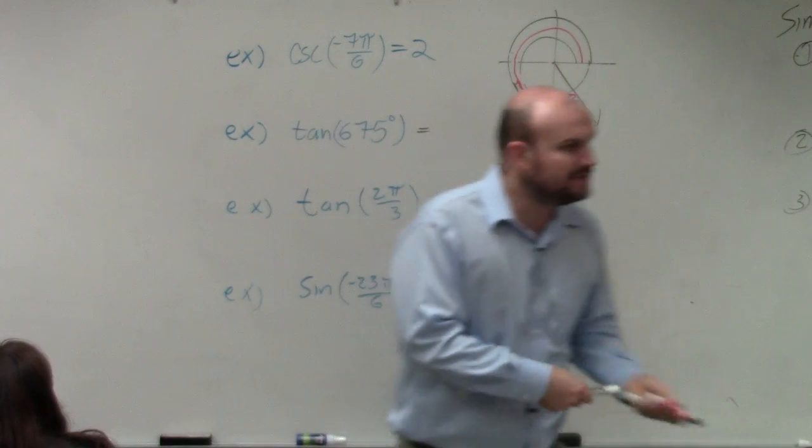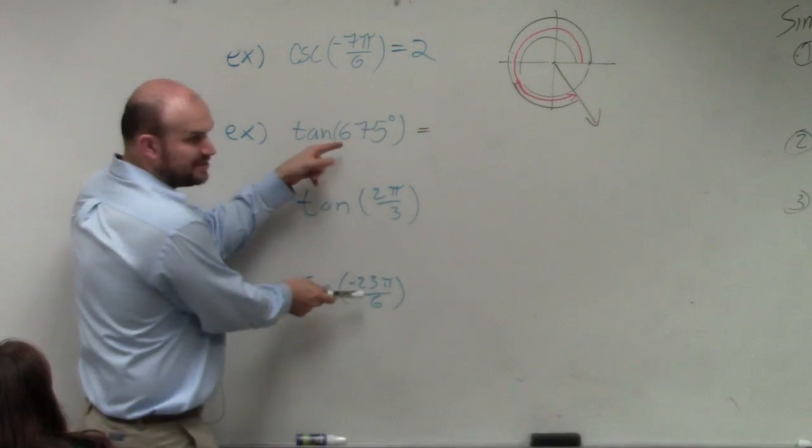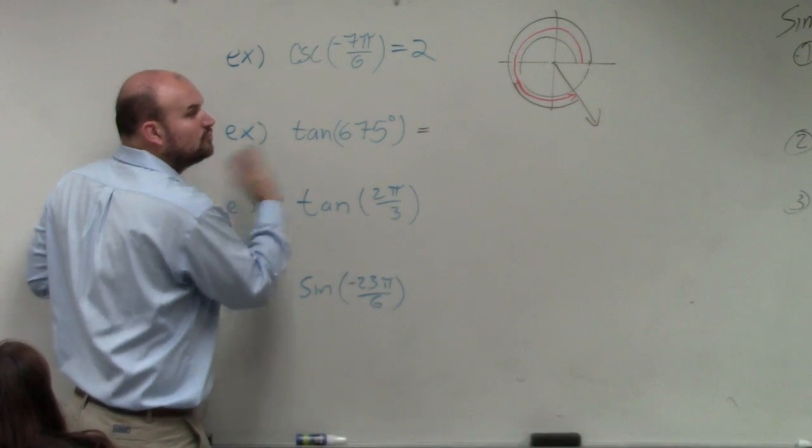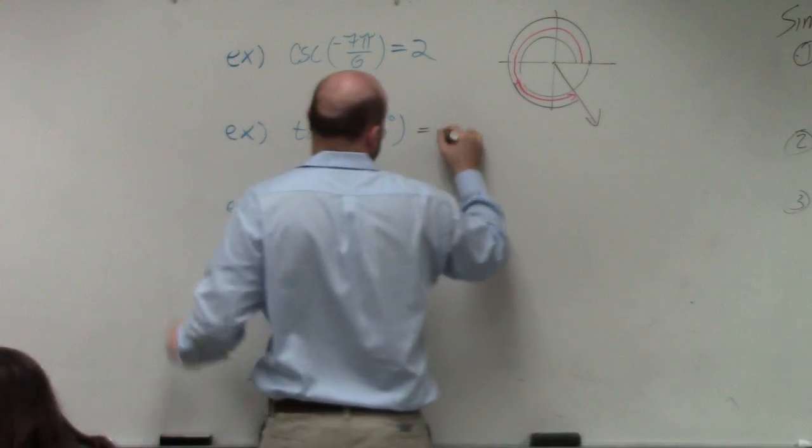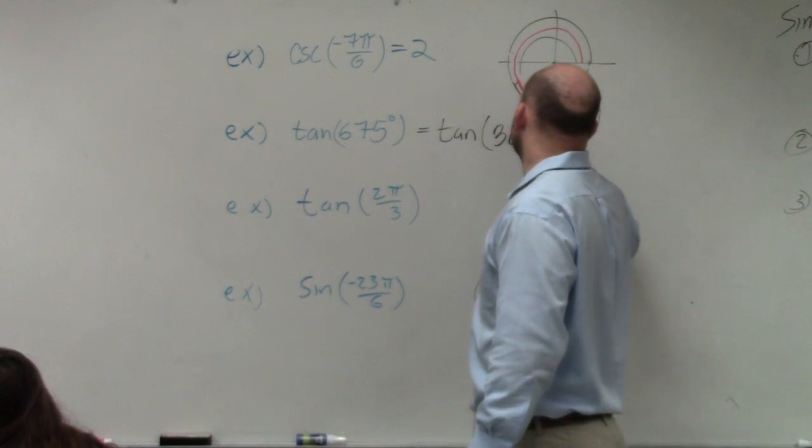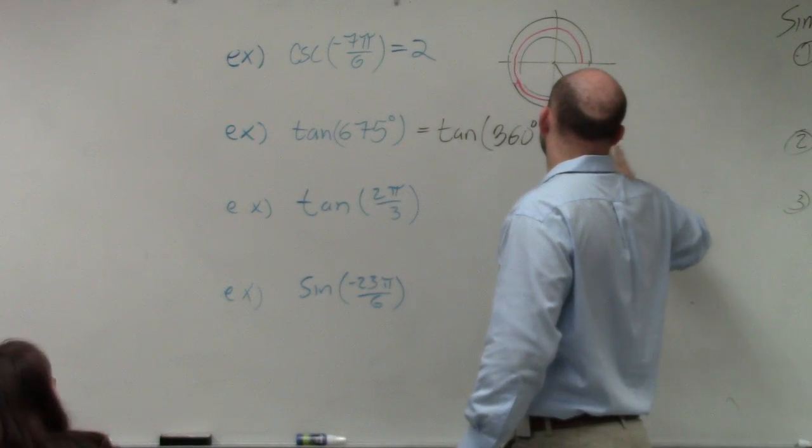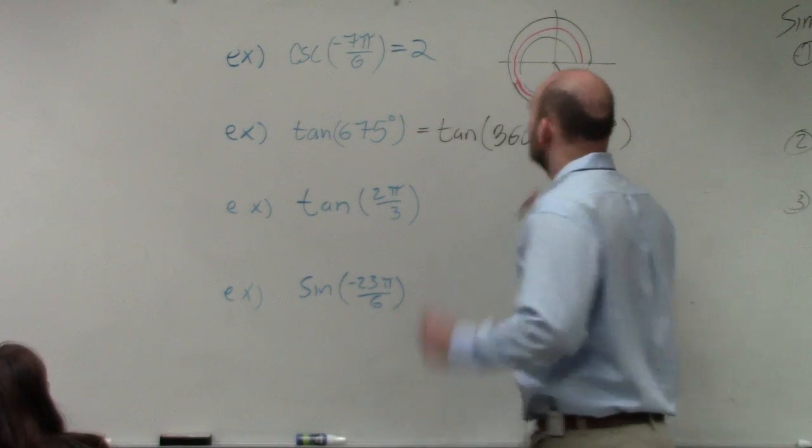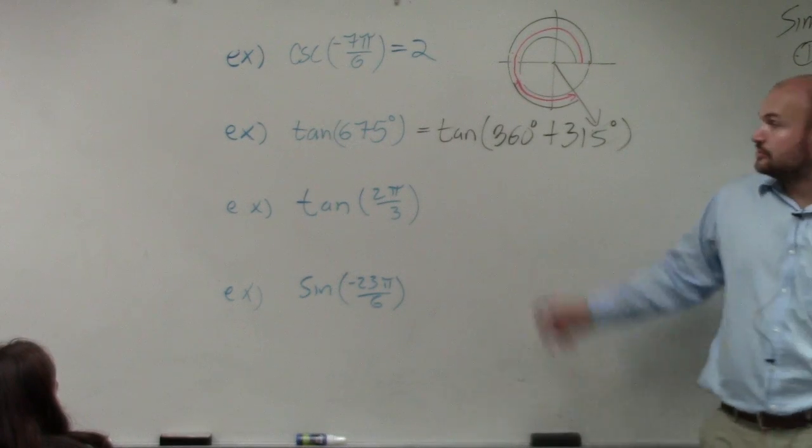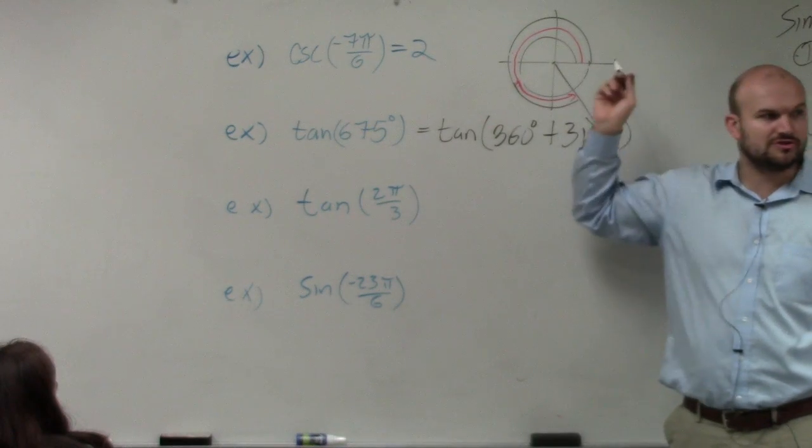So when we're saying using period of an aid, a little helpful hint, and we're going to do it for these two. Whenever you guys see an angle that's greater than 360, write it as a period of an aid. Do you guys agree with me that 360 is just one revolution about the circle? Yeah.